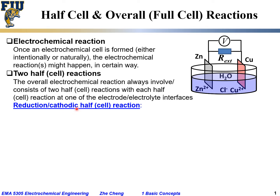Reduction means a species is getting electrons and gets reduced. For example, the cathodic or reduction half-cell reaction for this electrochemical cell would be: copper 2+ ion plus 2 electrons becomes copper metal (Cu⁰). This means the copper ion from the solution combines with electrons from the copper electrode and deposits onto the copper electrode. This is one of the half-cell reactions, and because it is reduction, we also call it the cathodic half-cell reaction.